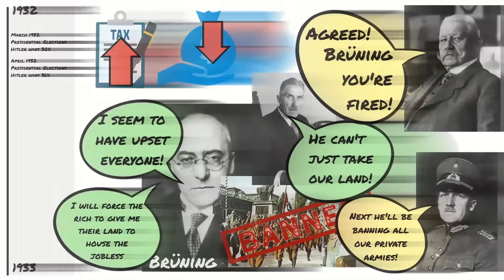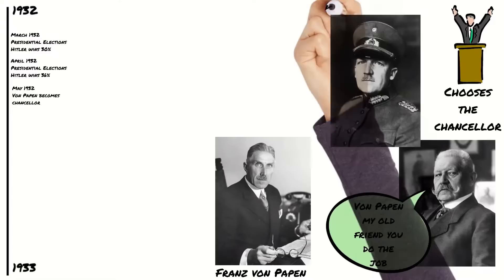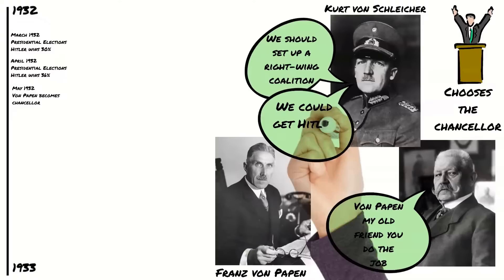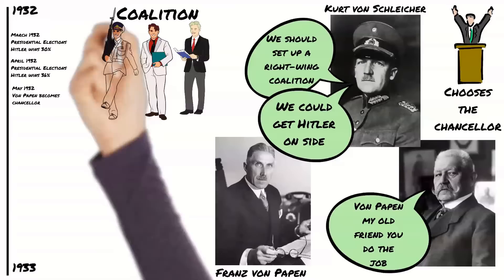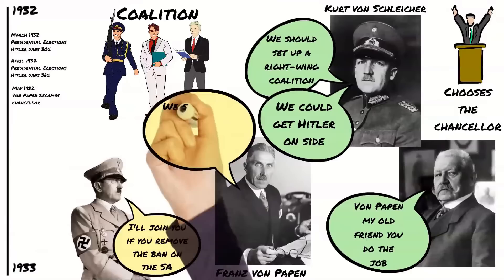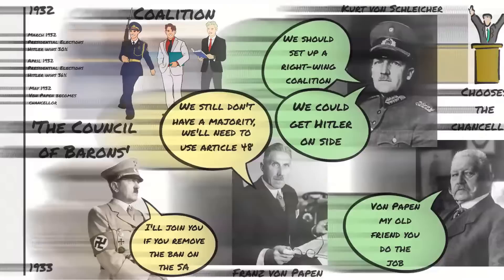The Chancellor was chosen by the President according to the Weimar constitution, so von Hindenburg immediately placed the right-wing Catholic von Papen in the role. Army officer Kurt von Schleicher had been advising the President and suggested a right-wing coalition. Von Schleicher believed Hitler could be persuaded to support them and that they could control Hitler and the Nazi party. The coalition was made up of wealthy businessmen, landowners and army officers. Hitler agreed to support the coalition if the ban on the SA and SS was lifted. Even together they didn't have a majority in the Reichstag, so the coalition was completely undemocratic and ruled by decree using Article 48. The people nicknamed the government the Council of Barons.